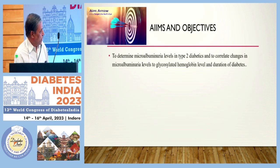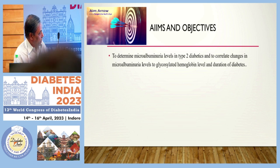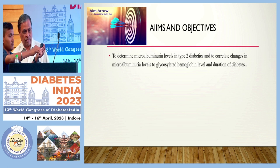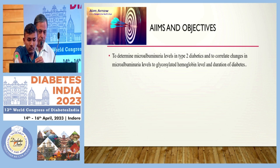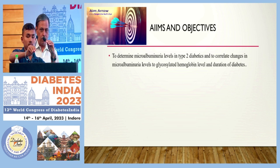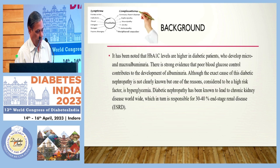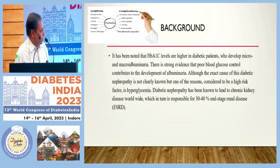The aim was to assess microalbuminuria levels in diabetic patients in relation to glycosylated hemoglobin and duration of diabetes. TNC levels are higher in diabetic patients almost 10 years from the date of diagnosis, contributing to both micro and macrovascular complications.